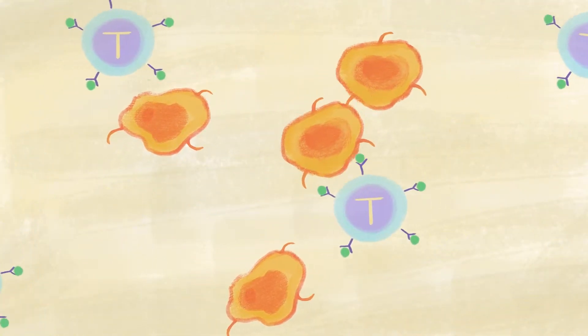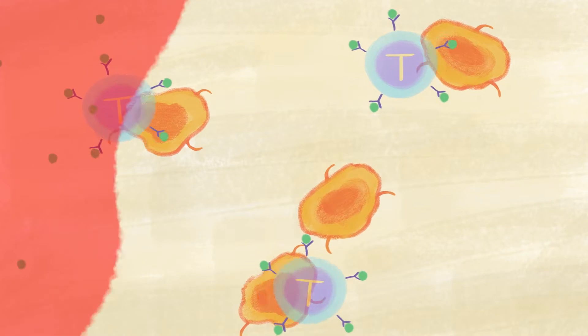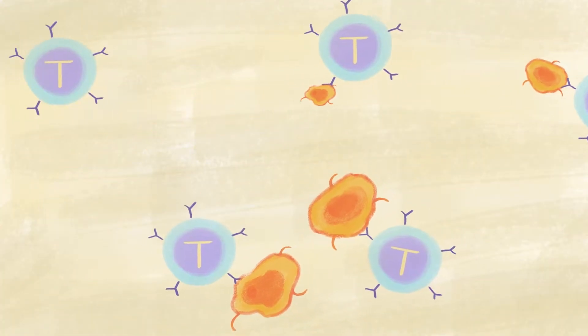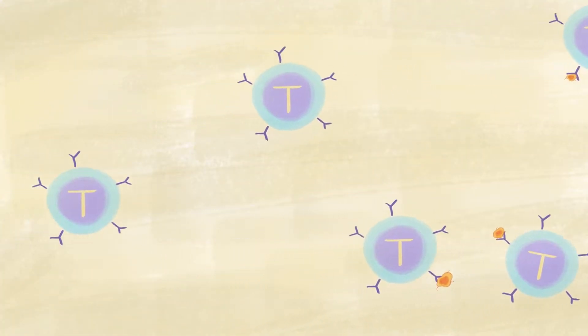When the immune system's T cells are blocked from attacking tumor cells, they can be unblocked with new drugs called checkpoint inhibitors, allowing them to recognize and destroy the cancer cells.